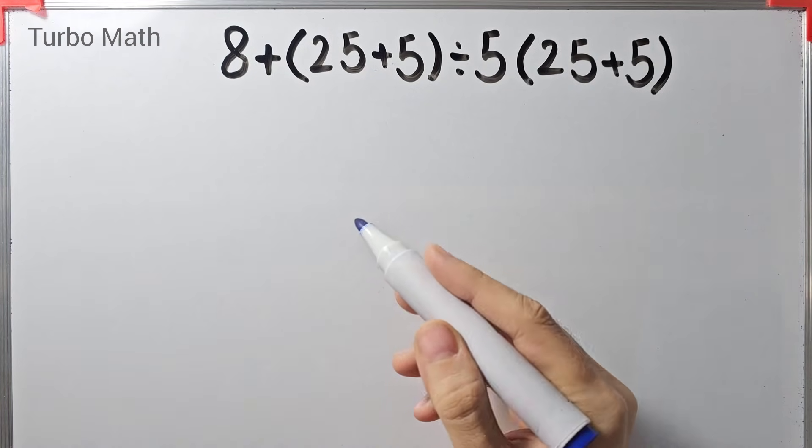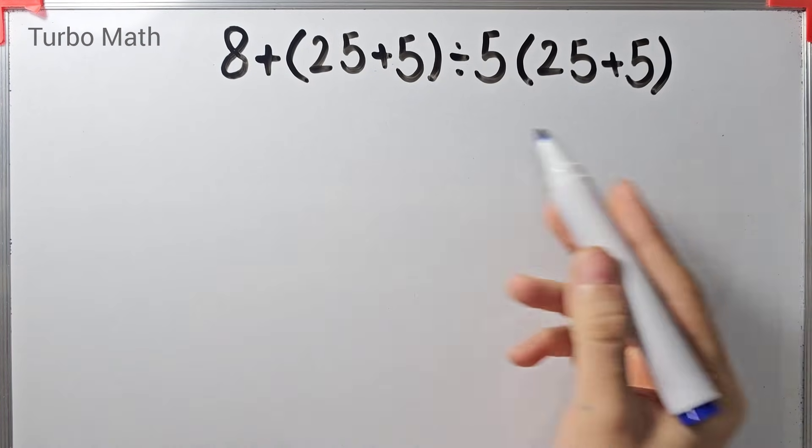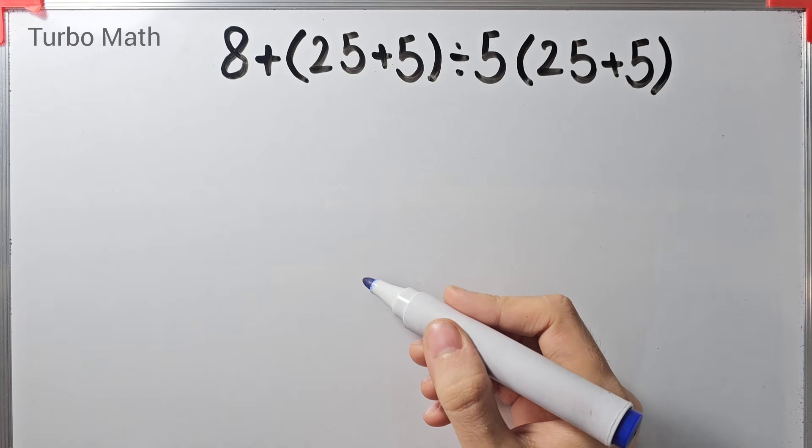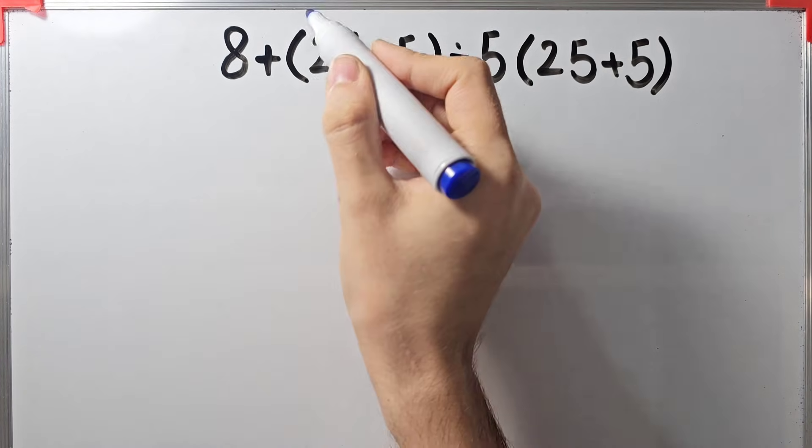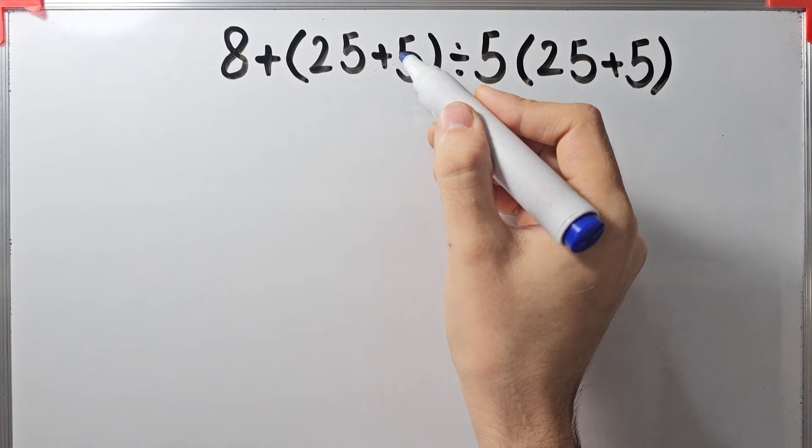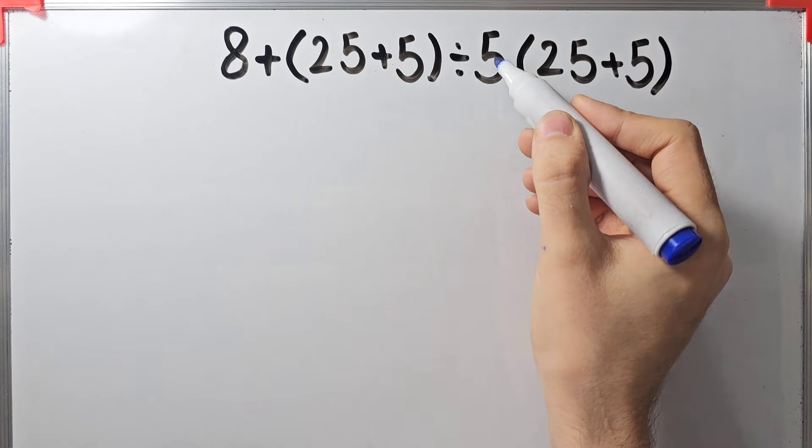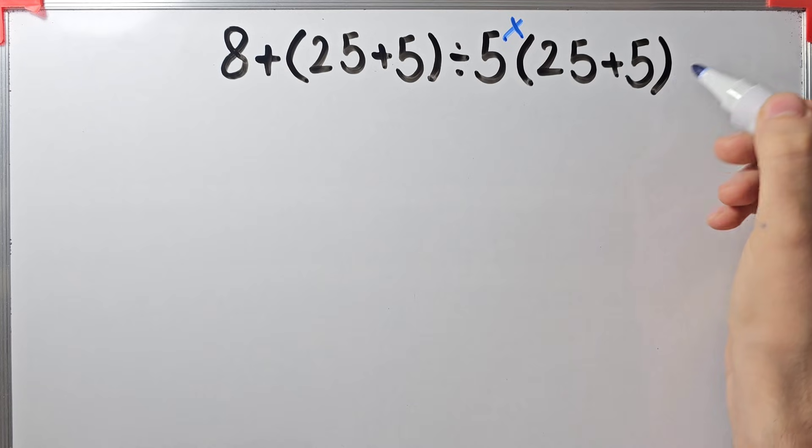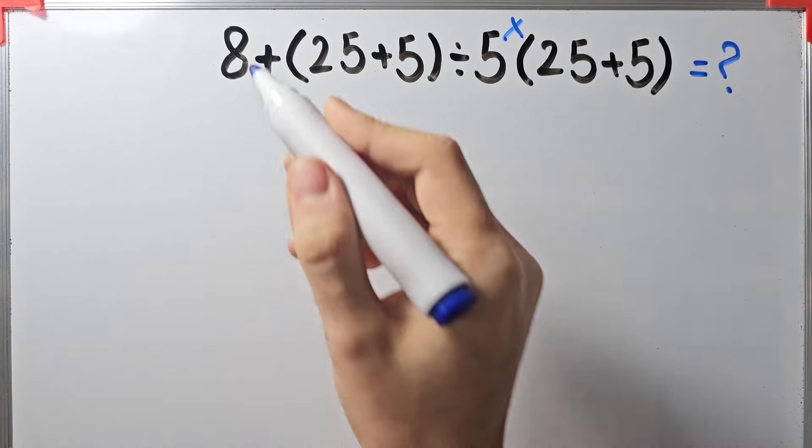Hi friends, welcome to Turbo Math channel. Many people when they see this question don't know which operation to do first, so they often make a mistake. 8 plus open parenthesis 25 plus 5 closed parenthesis divided by 5, then times open parenthesis 25 plus 5 closed parenthesis. What is the value of this expression?